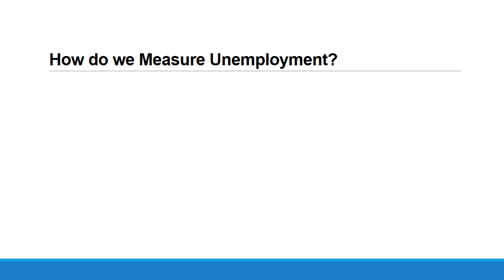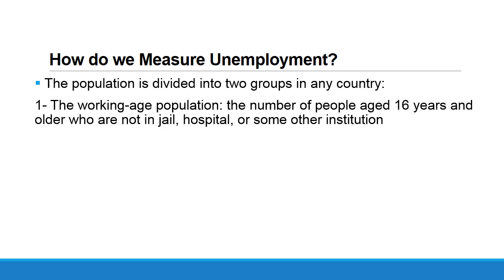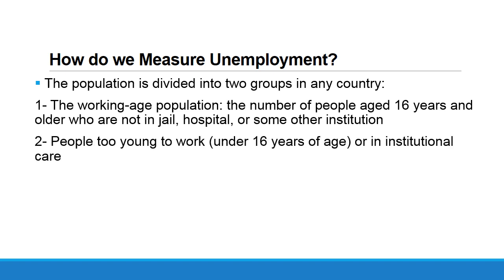Now we turn to the important question: how do we measure unemployment? How can we calculate the unemployment rate in any economy? We divide the population into two main groups. Number one: the working age population — those aged 16 years and above who are not in jail, hospital, or some other institution. Number two: people who are too young to work, below 16 years of age, or those in institutional care. So we divide population into working age population and institutionalized.